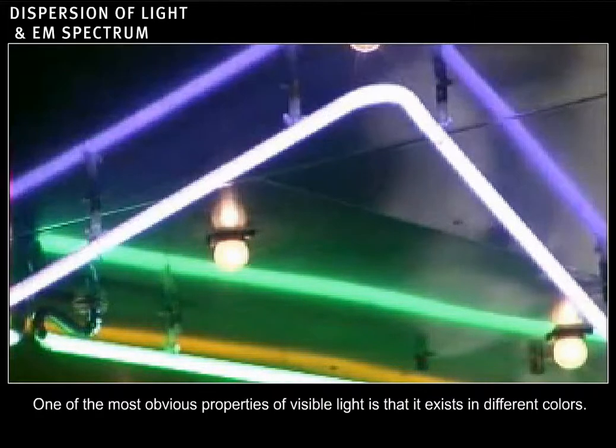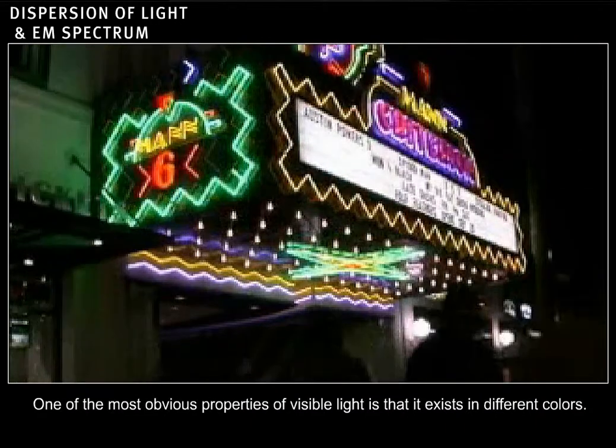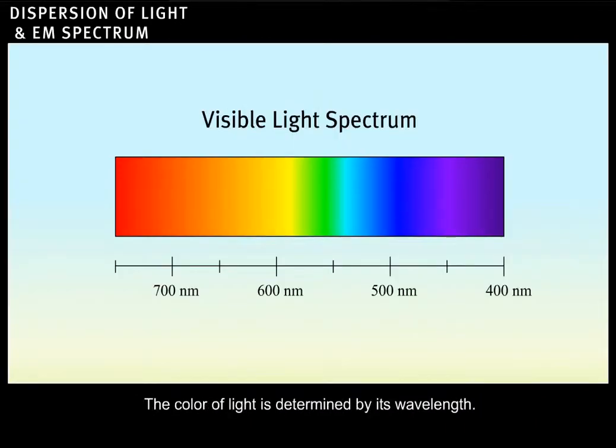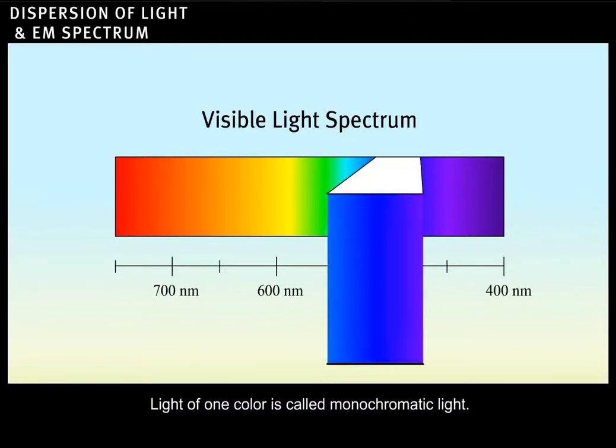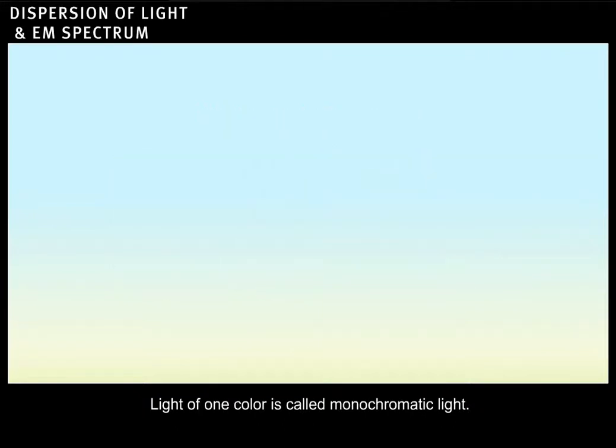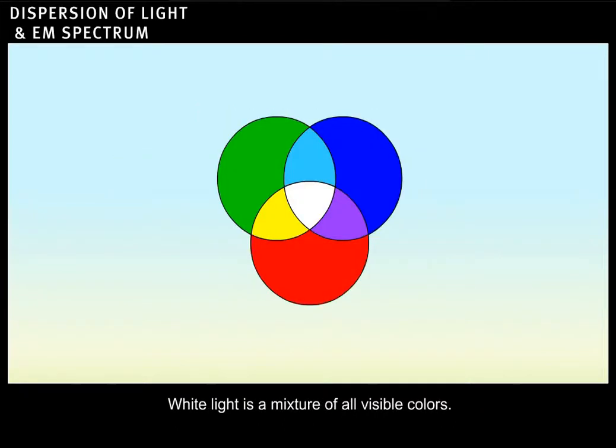One of the most obvious properties of visible light is that it exists in different colors. The color of light is determined by its wavelength. Light of one color is called monochromatic light. White light is a mixture of all visible colors.